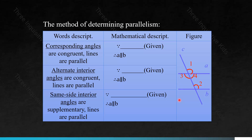This is how we use different types of angles to determine parallelism. When corresponding angles are congruent, the lines are parallel — if angle 1 equals angle 2, then a is parallel to b. When alternate interior angles are congruent, the lines are parallel — if angle 3 equals angle 2, then a is parallel to b. When same-side interior angles are supplementary, the lines are parallel — if angle 2 plus angle 4 equals 180 degrees, then line A is parallel to line B.